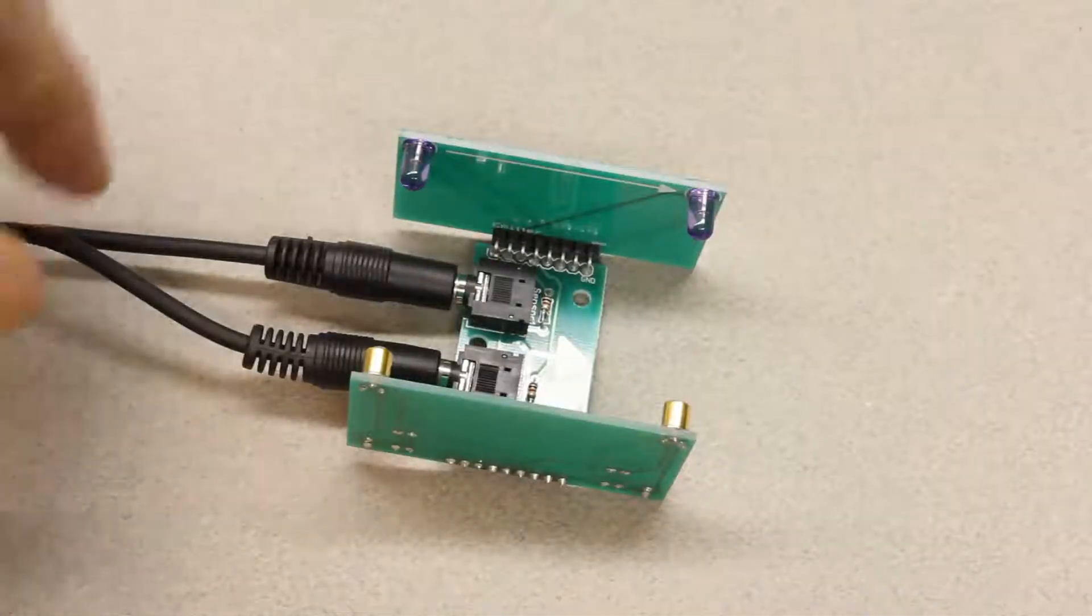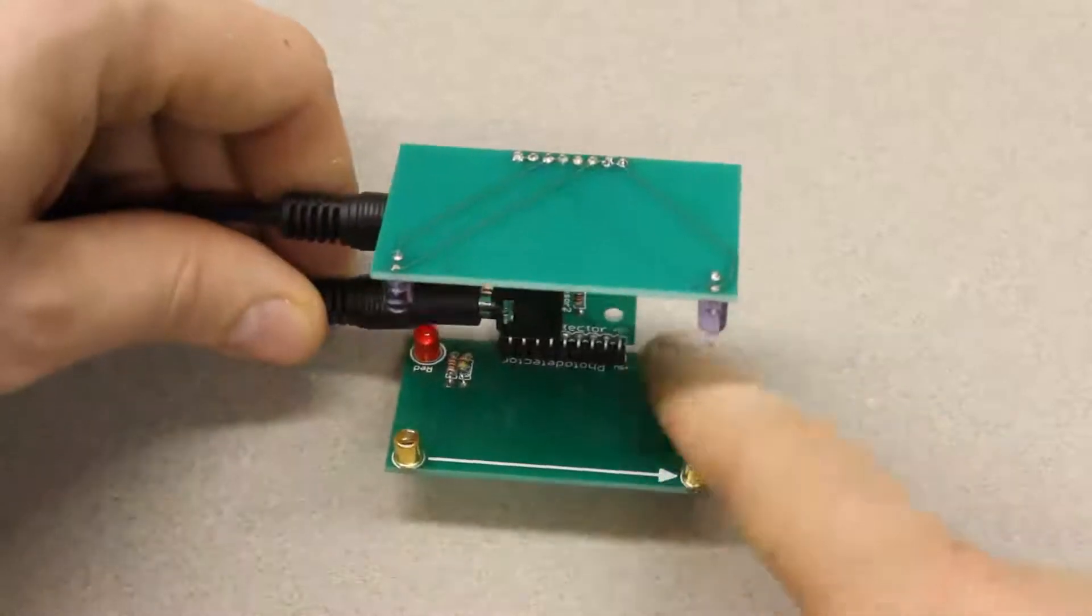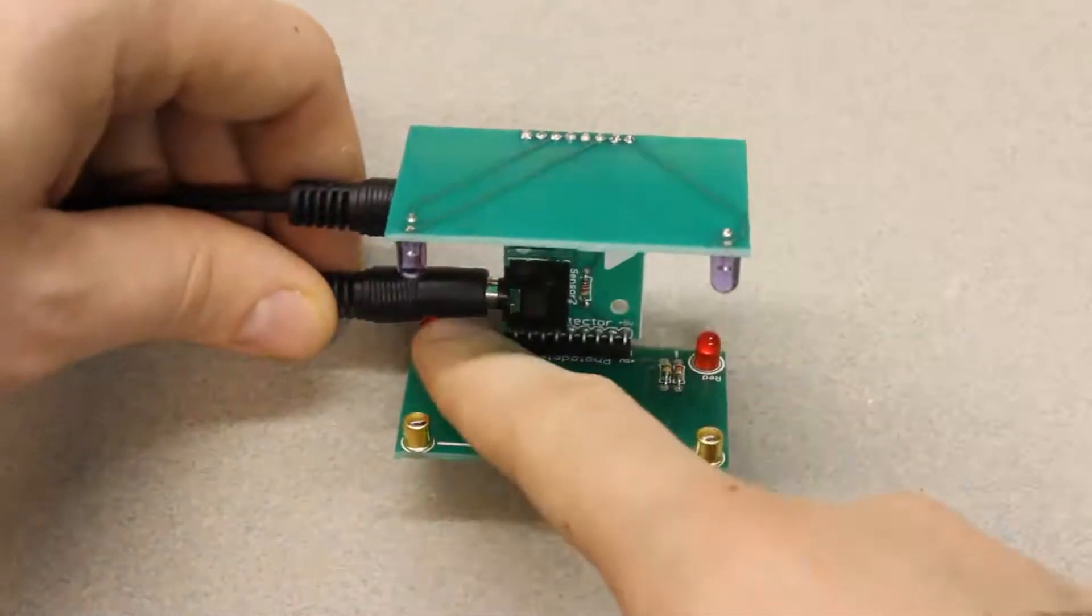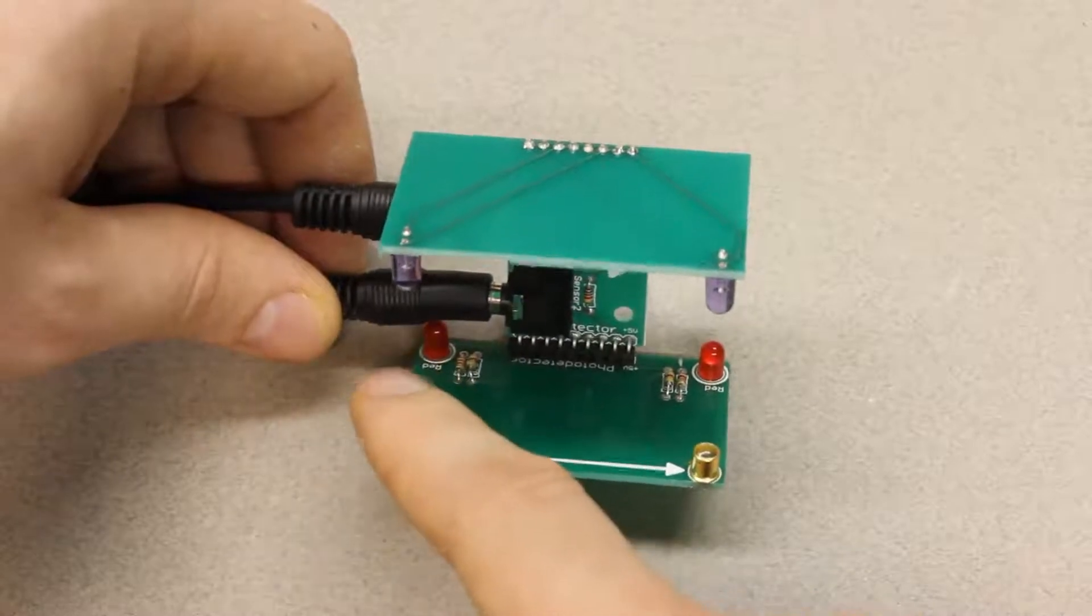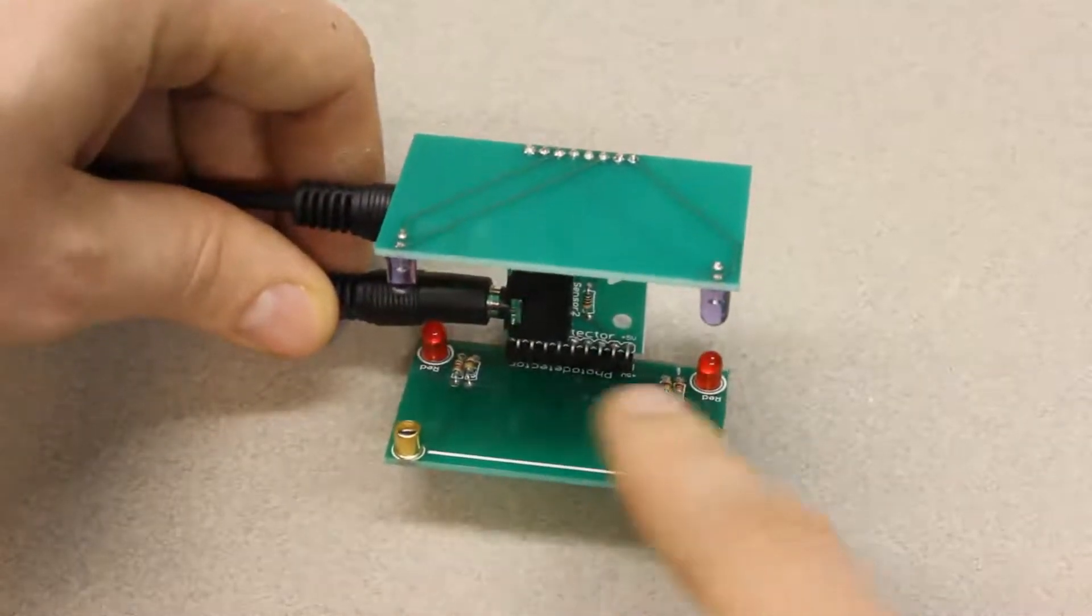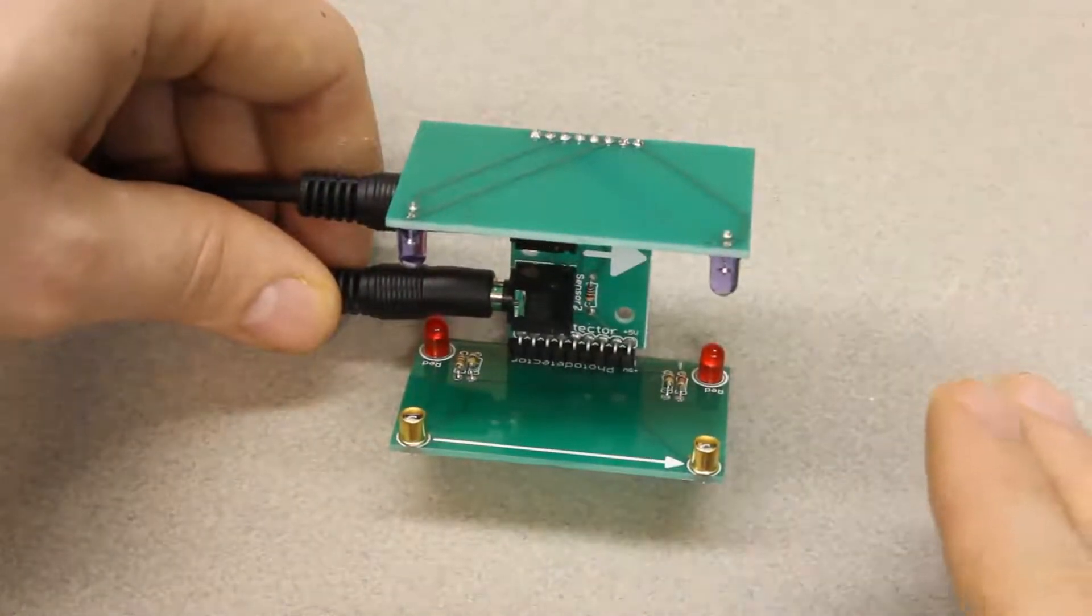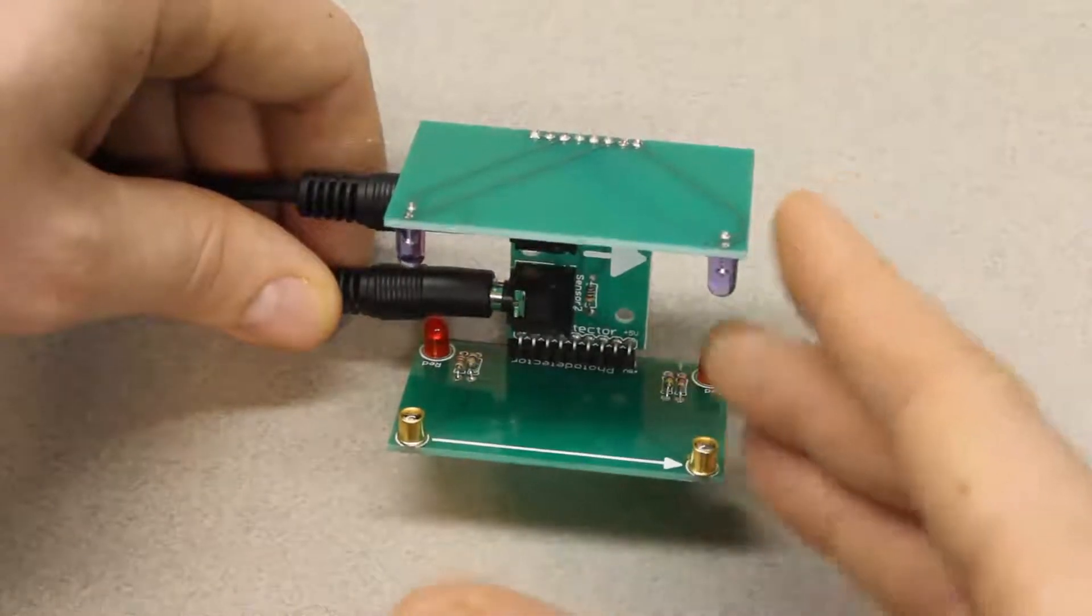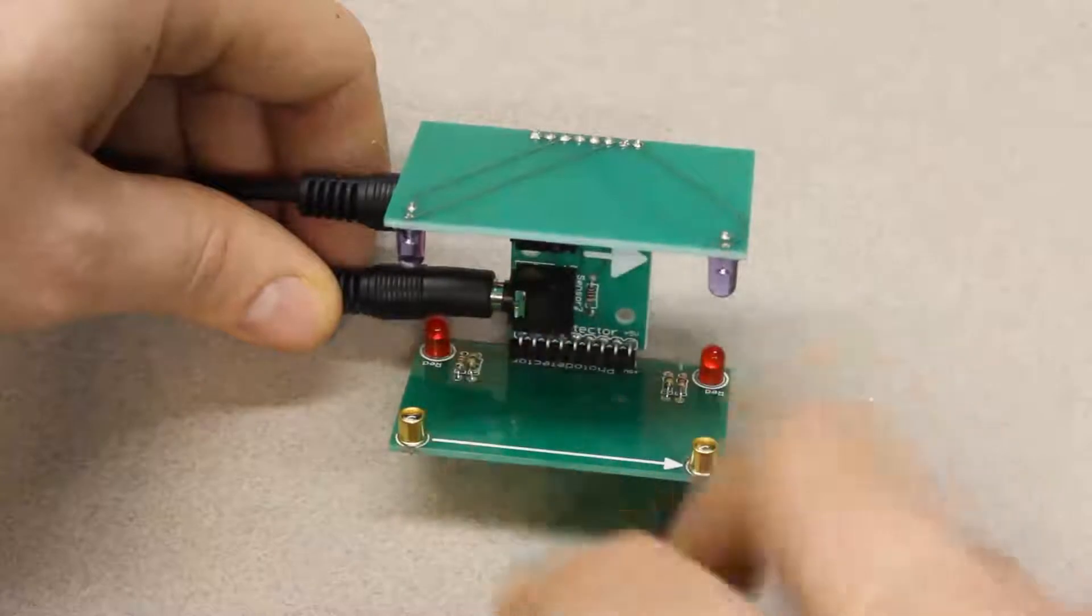So to start off, I'll show the improvements that I made to the projectile sensor. The first one is these red LEDs down here. These are on until a projectile or your finger blocks these sensors here, and then the LEDs go off. This is really useful when you're just trying to set up the projectile board in the right position and make sure that everything's in the right place.